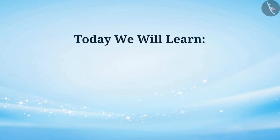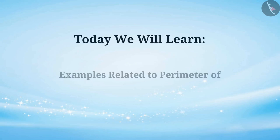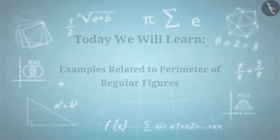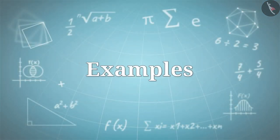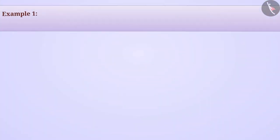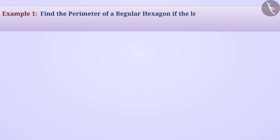Today we will learn about examples related to the perimeter of regular figures. Find the perimeter of a regular hexagon if the length of one of its sides is 6 centimetres.